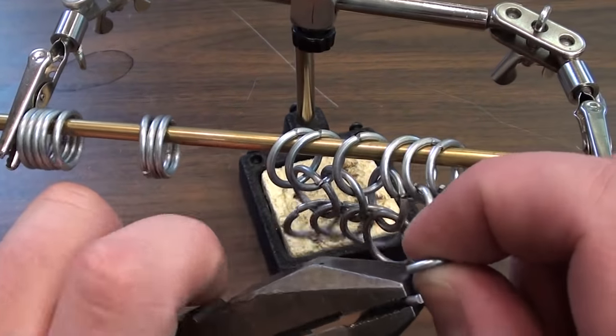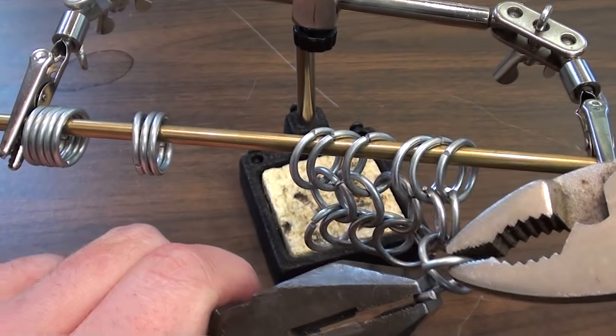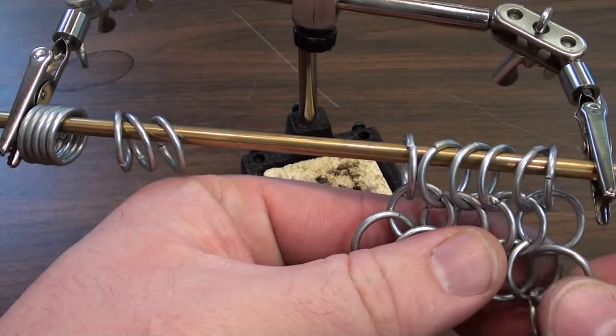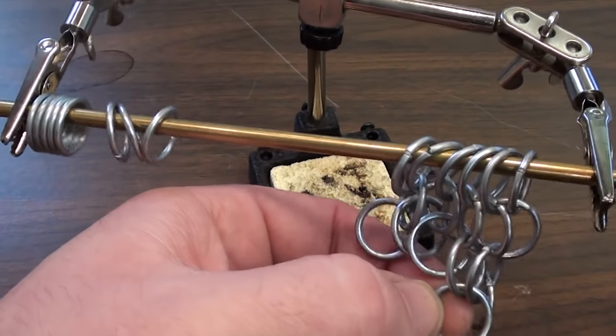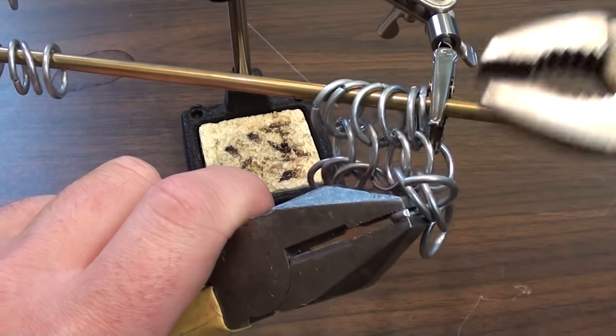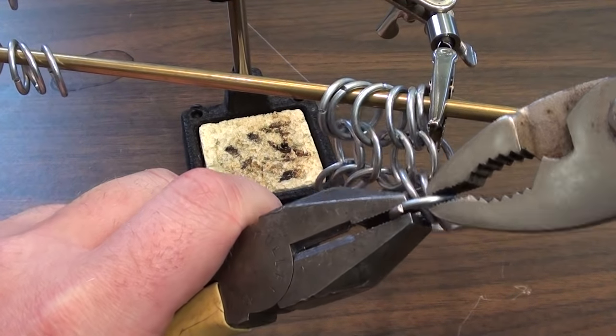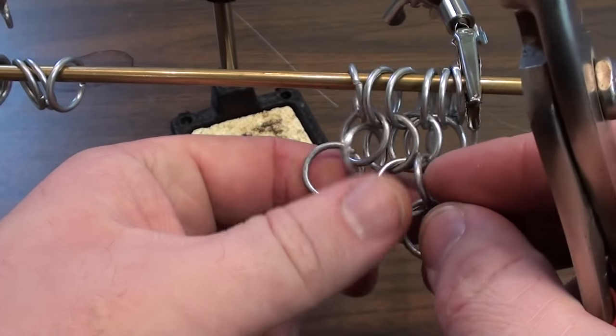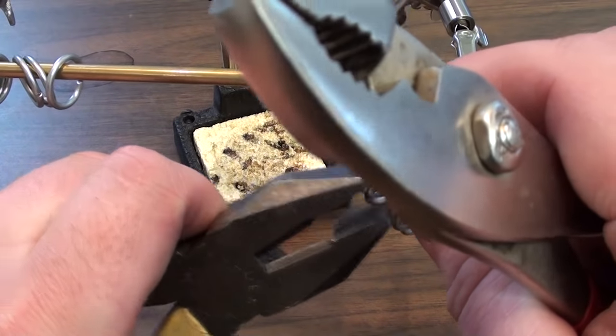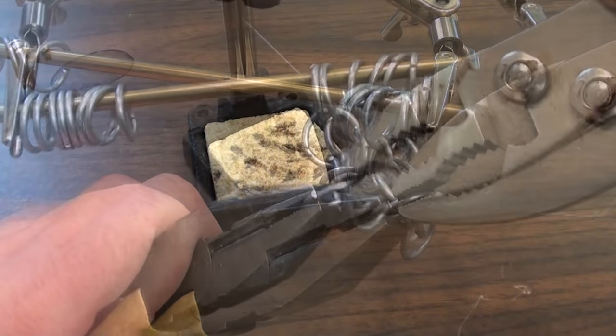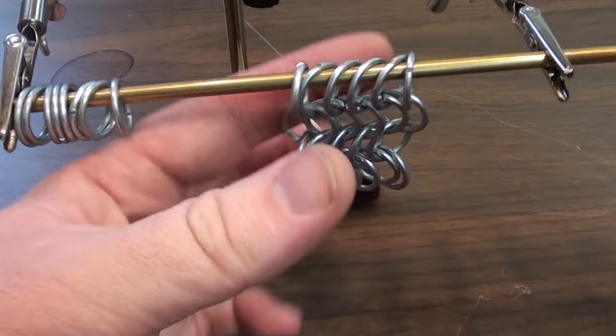So now on this end, there's a single link through one hole to line up with the other row. Now you have a small piece of chain mail started.